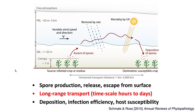These spores can go higher into the planetary boundary layer and travel many, many kilometers — perhaps hundreds or thousands of kilometers — until they're removed by rain. These are also living organisms, so they need to be viable when they land on a susceptible crop, and are affected quite a bit by UV.